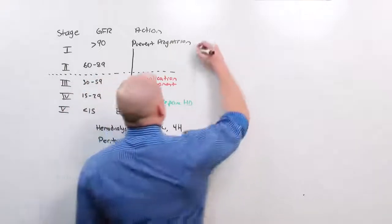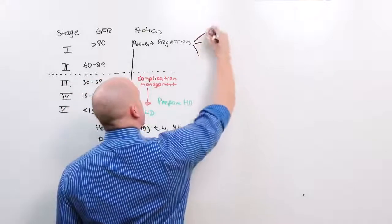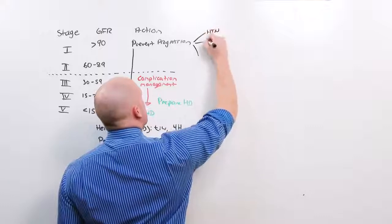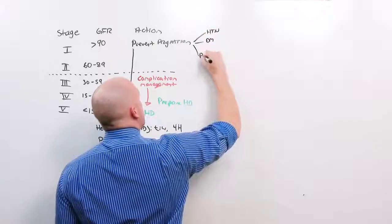So preventing progression comes down to three things: hypertension, diabetes, and proteinuria.